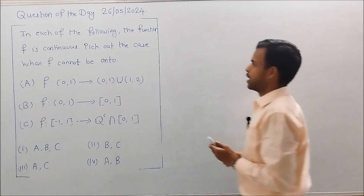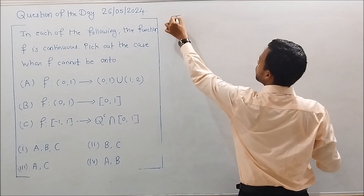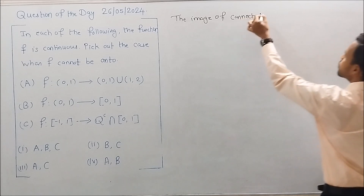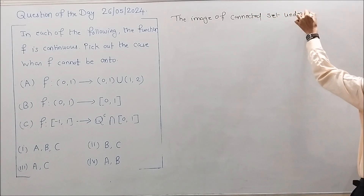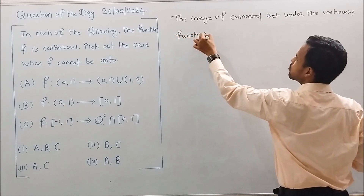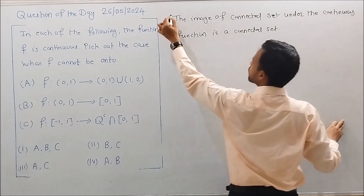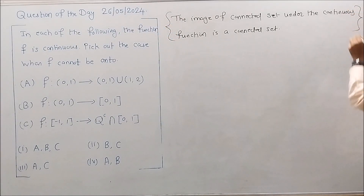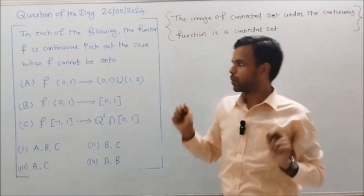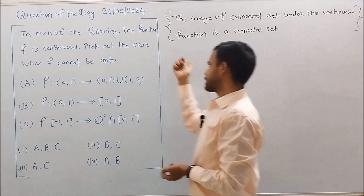Let's begin the solution. We will use one important property of continuous functions: the image of a connected set under a continuous function is a connected set. This property states that a continuous function maps a connected set to a connected set. As we have three different cases, we will consider them one by one.